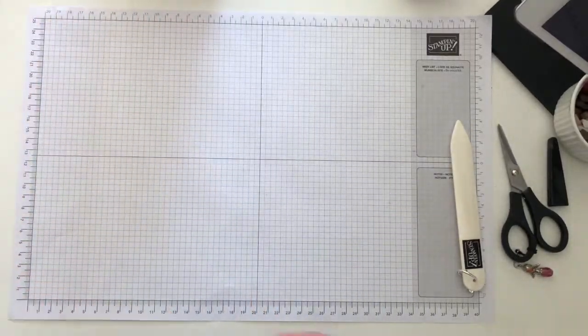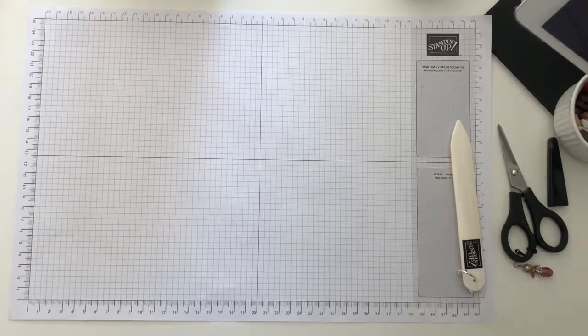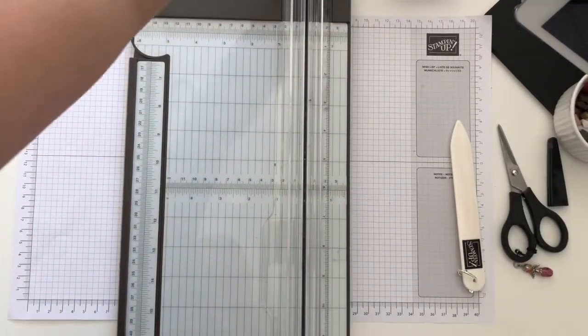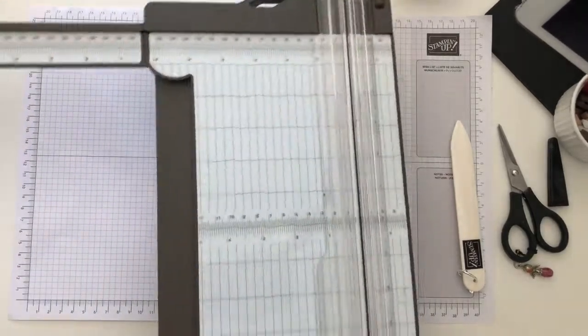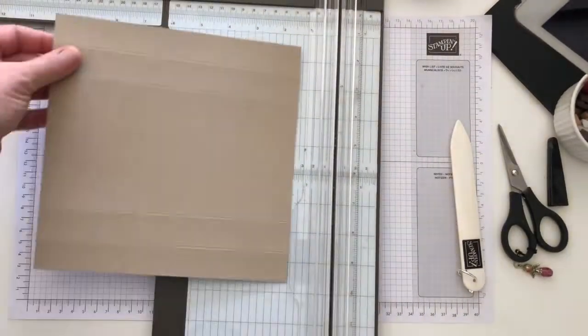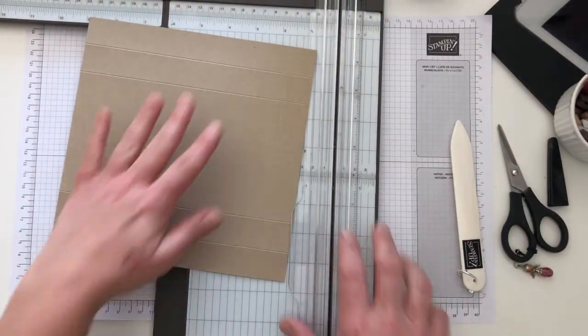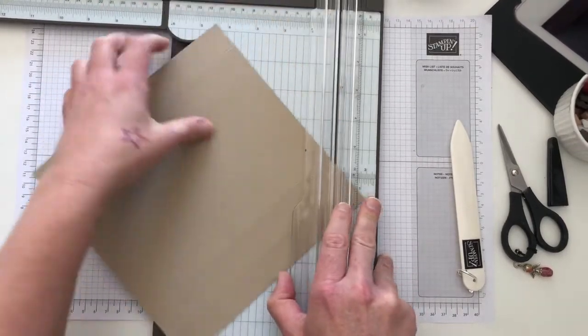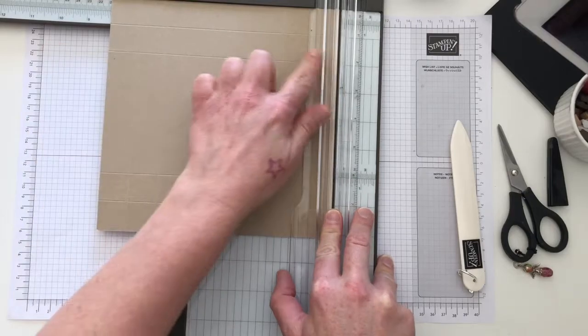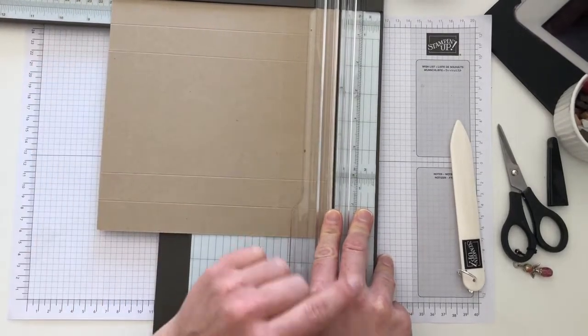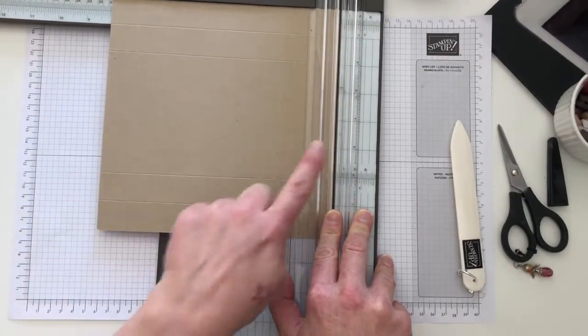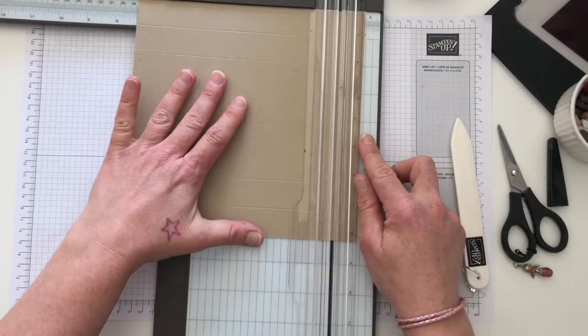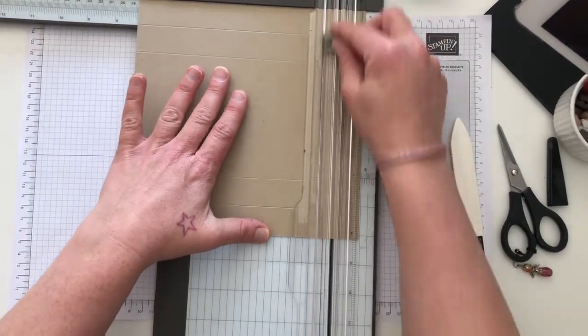To make the lid, you will need a piece of cardstock which measures 20.7cm by 20.7cm, and then you're going to score on all four sides at 2.5cm, which I always like to do this way, so 2.5cm on all four sides.